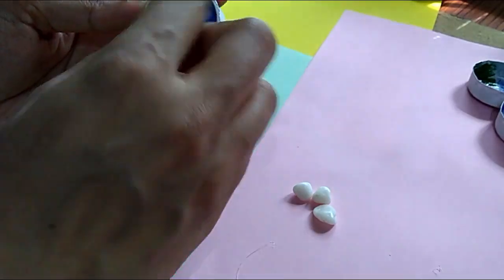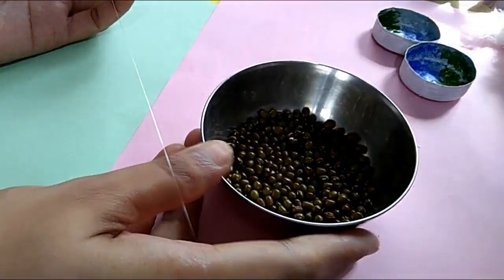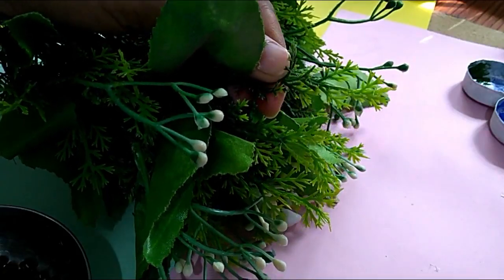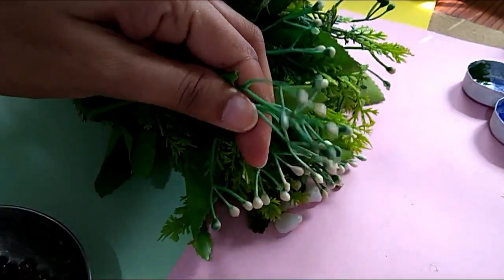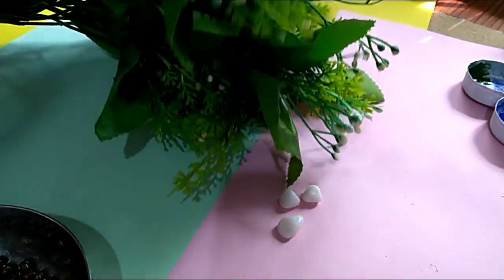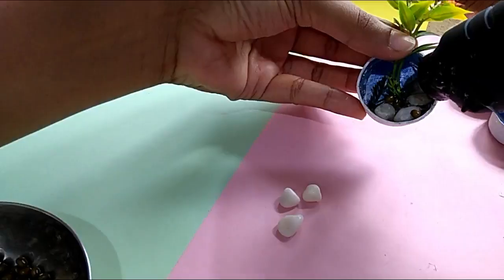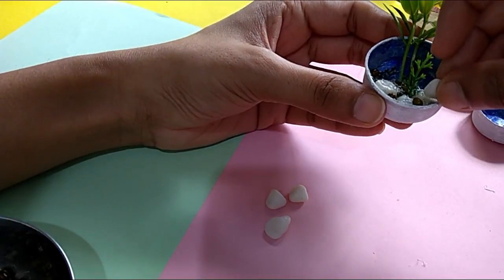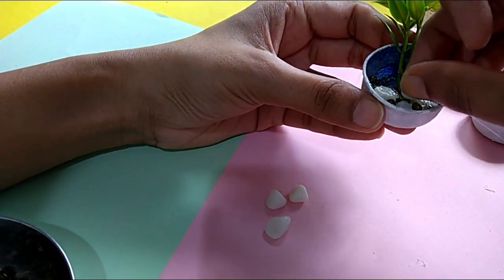I will add pebbles. If you don't have pebbles, you can also use moong dal and color it. We will use artificial leaves. I will stick it in the center, then I will add pebbles on the other side.